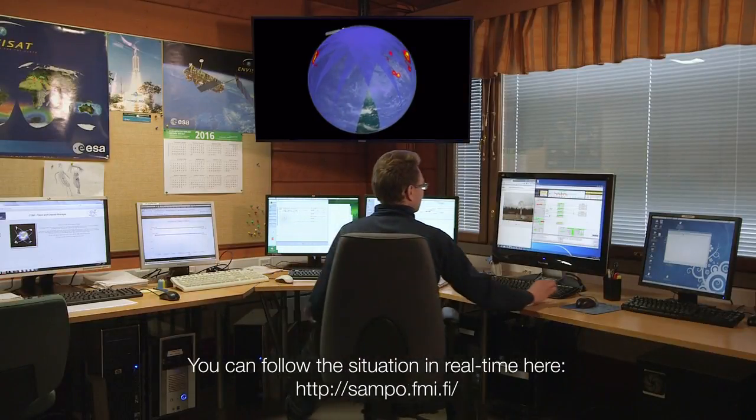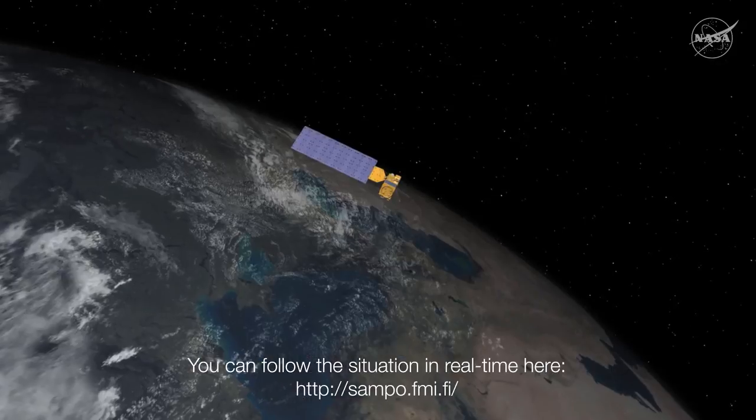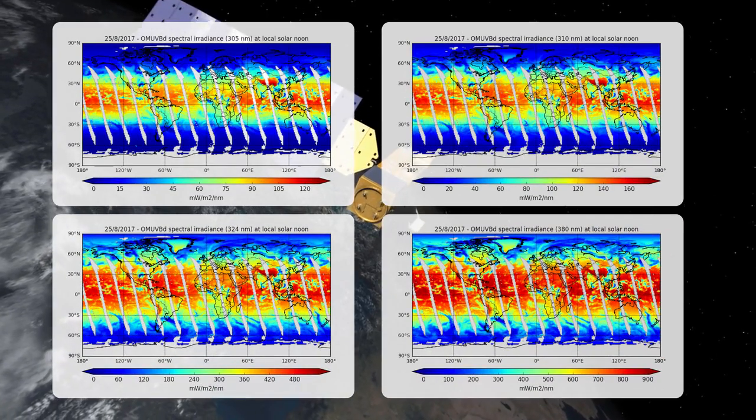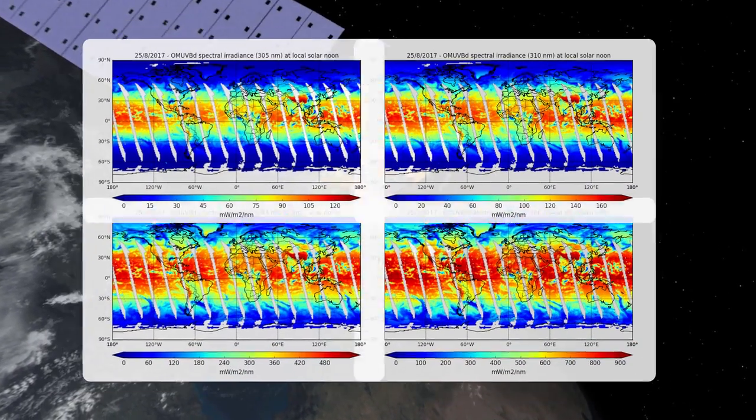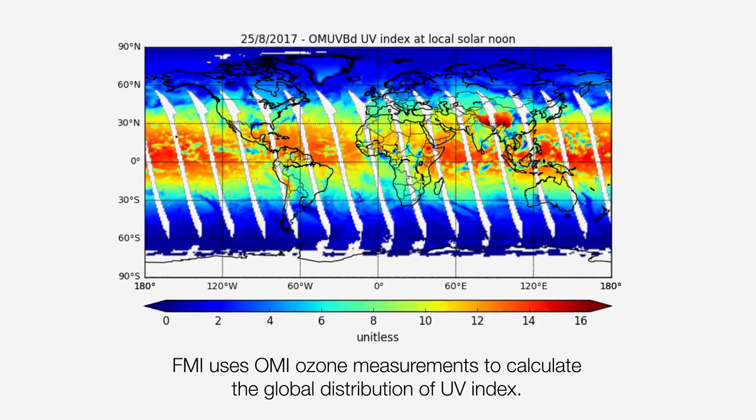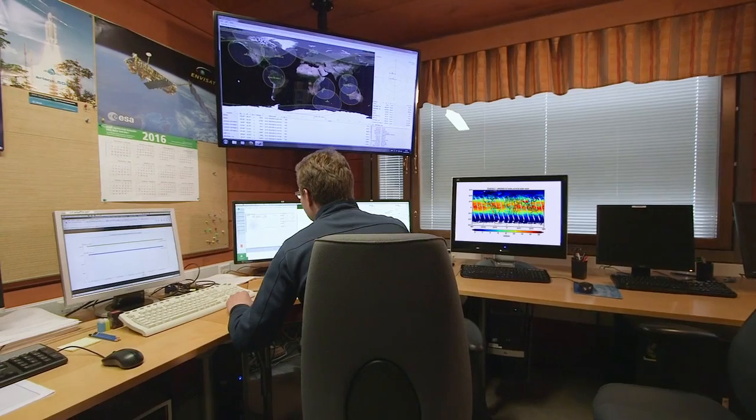The Finnish Meteorological Institute has contributed strongly in satellite projects. NASA's Aura satellite has a Finnish-Dutch OMI measuring instrument, which measures the amount of ozone. The Arctic Space Centre in Sudankula receives measurements from the OMI instrument in real-time.